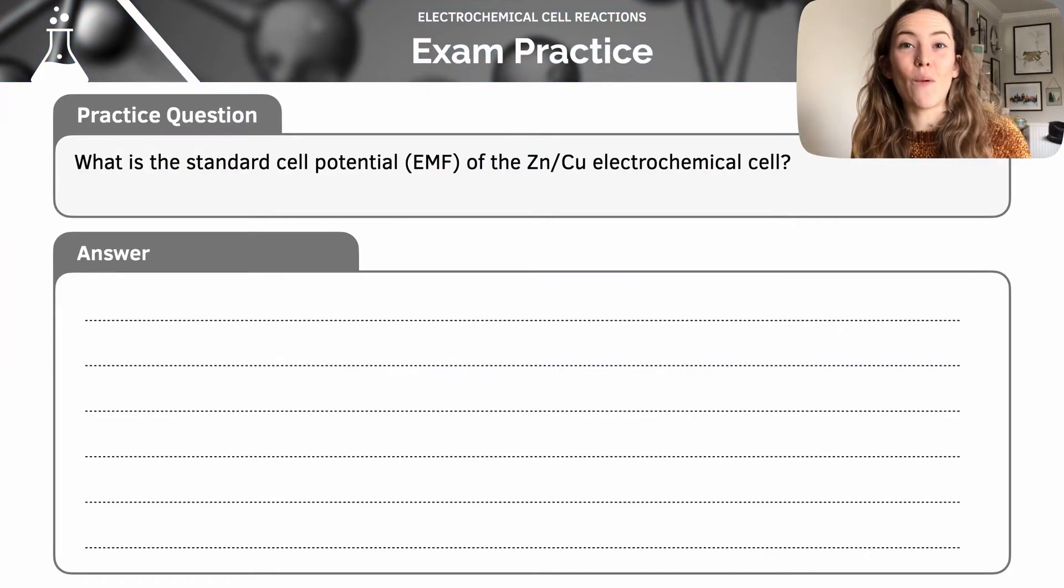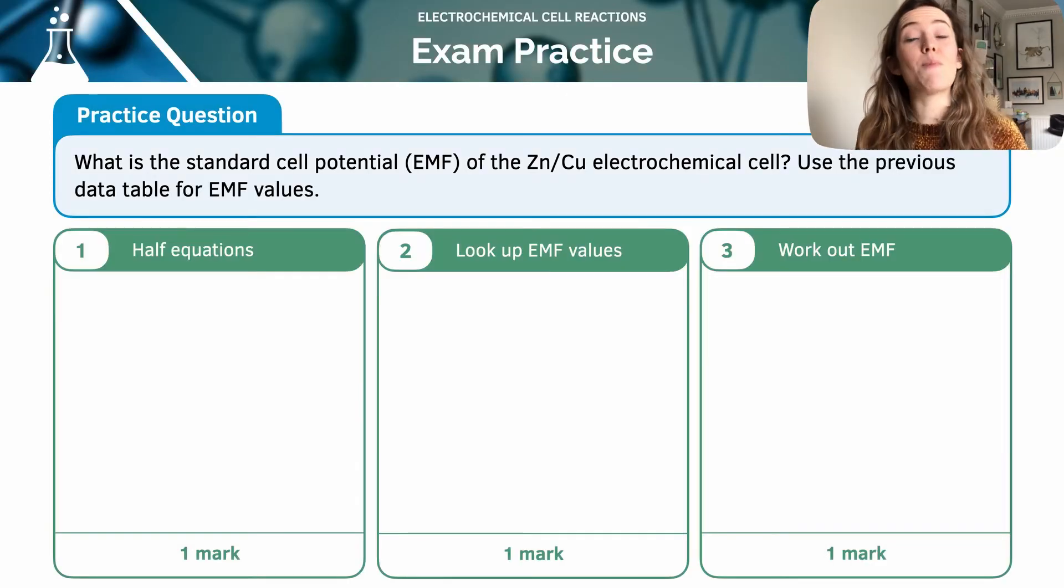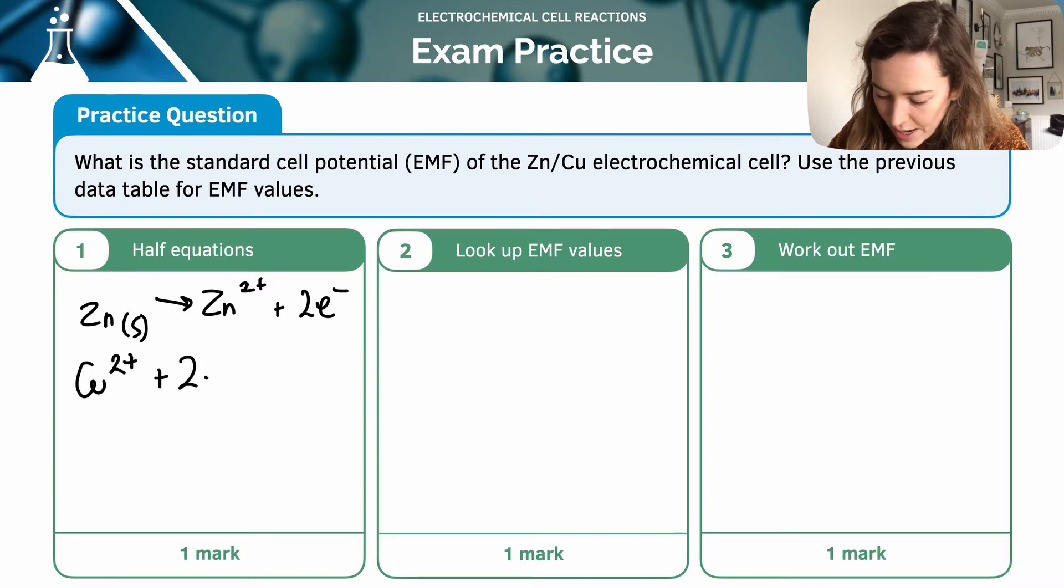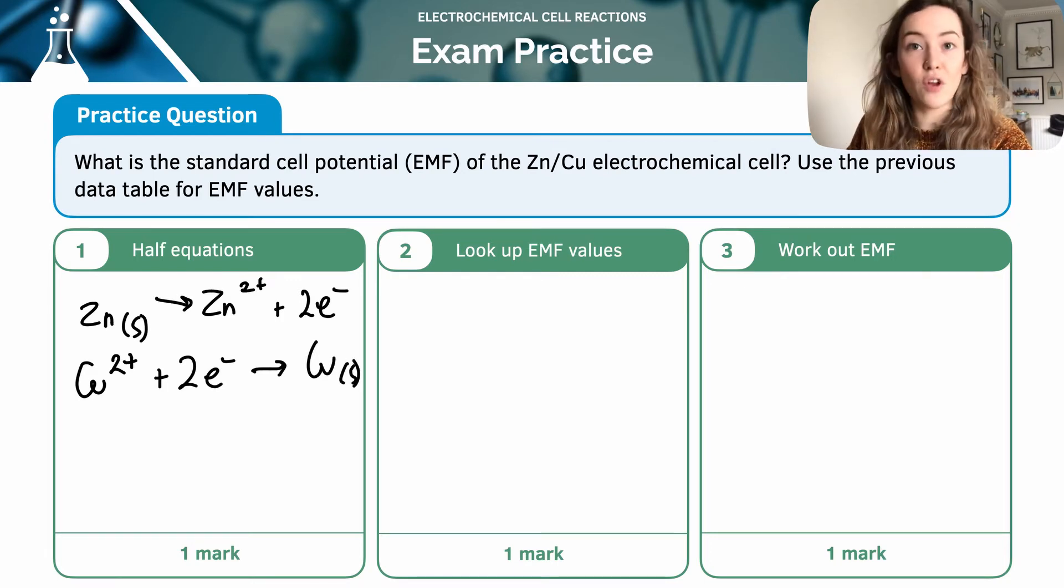Here's a practice question to have a go at. You can pause the video and give it a go yourself, or watch my work through. We're being asked to actually work out what the EMF or the cell potential is of that electrochemical cell. So let me remind myself of my half equations. And then I had my oxidation or reduction happening of my copper. So there they are. I've written them that way around. And then I have my full equation.